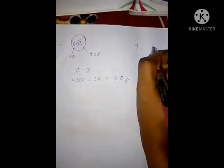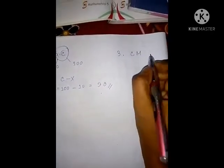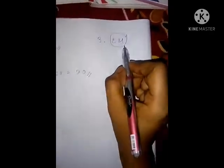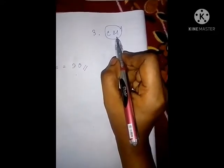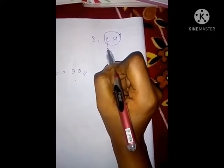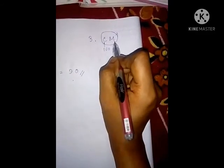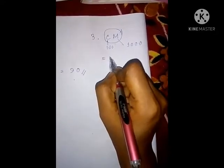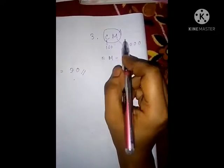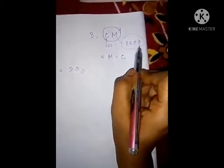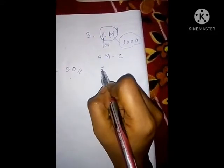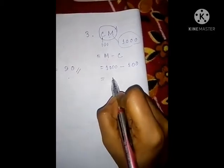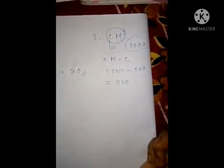Example 3: CM. We have to find the value of CM. C is 100 and M is 1000. We do M minus C because M has greater value than C: 1000 minus 100 equals 900. So the value of CM is 900.